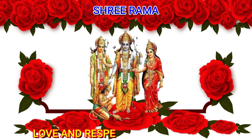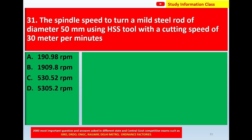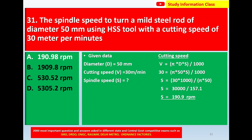Namaste, Sri Rama — love and respect. Question 31: find the spindle speed to turn a mild steel rod of diameter 50 mm using an HSS tool with a cutting speed of 30 meters per minute. Options: A) 190.98 rpm, B) 1909.8 rpm, C) 530.52 rpm, D) 5305.2 rpm. The correct answer is option A: 190.98 rpm.